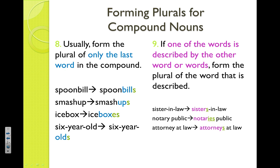Now let's look at how to form plurals for compound nouns. Number eight is the common sense rule: you just add an S to the end, or ES depending on what consonants and vowels are at the end. The example spoonbill — that's a bird — becomes spoonbills, because we're talking about multiple birds, not multiple spoons. Smash up becomes smash ups. Ice box becomes ice boxes — notice the X, so we use our ES rule. And six year old becomes six years old because you're talking about the kid, so the S goes at the end.